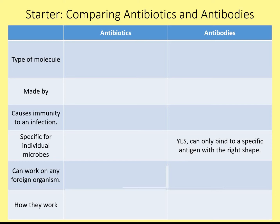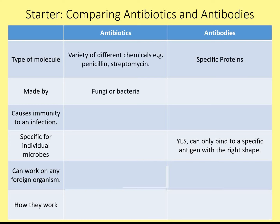So, key things: antibiotics are lots of different types of chemicals such as penicillin and streptomycin, whereas antibodies are specific proteins made by lymphocytes. Antibiotics come mainly from fungi, but some bacteria also produce them to kill off other microorganisms, while antibodies are produced by your lymphocytes or white blood cells. Do they cause immunity? Antibiotics don't — they're just killing bacteria and not stimulating your immune system — but antibodies do, because you produce memory cells from those lymphocytes.